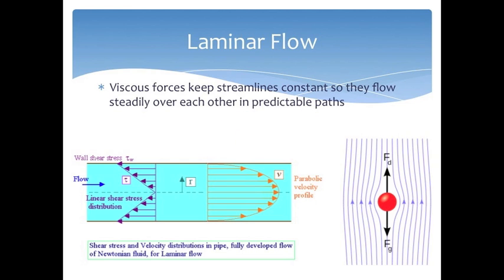Variations in velocity in laminar flow are smooth and predictable. Streamlines are parallel to one another, allowing for precise calculations and models to be made.